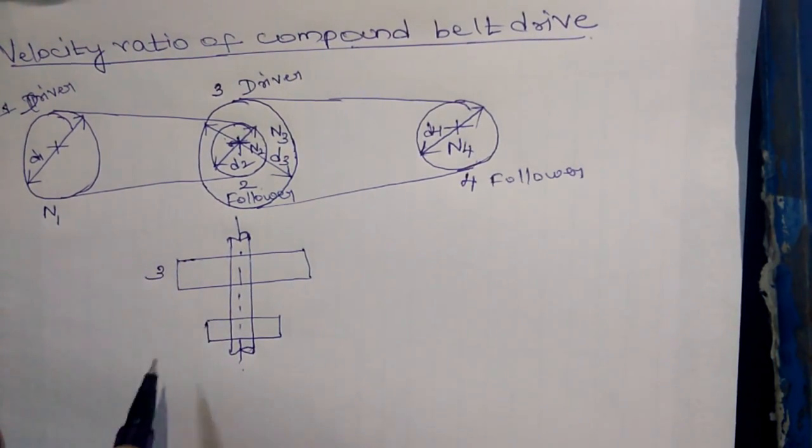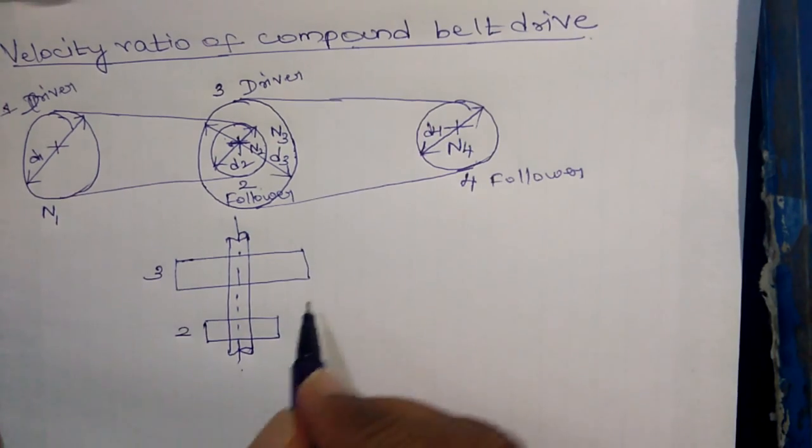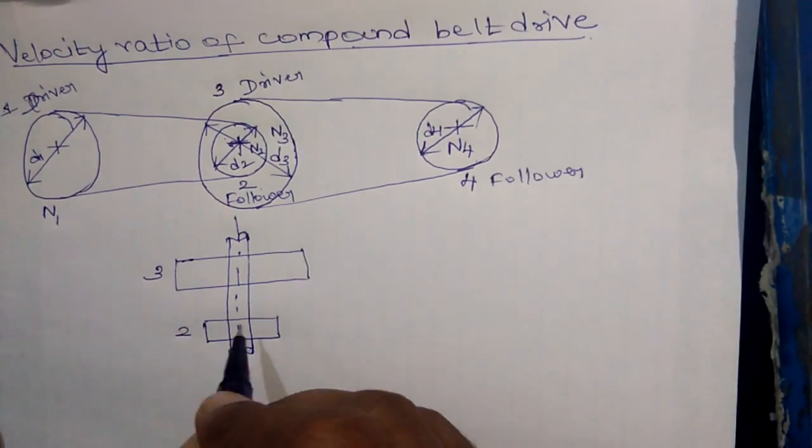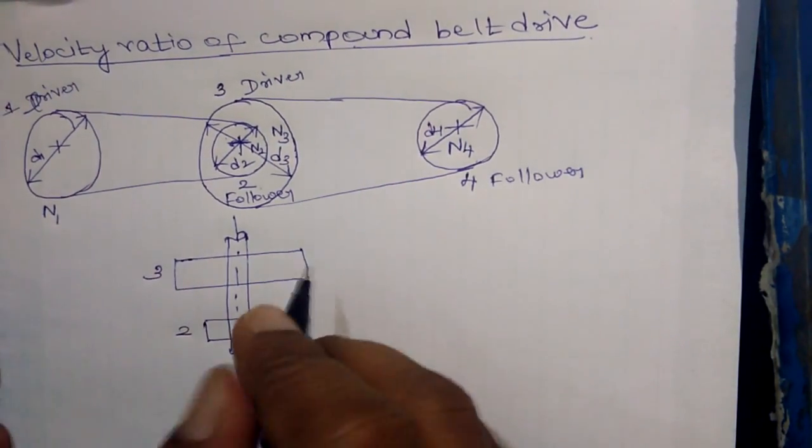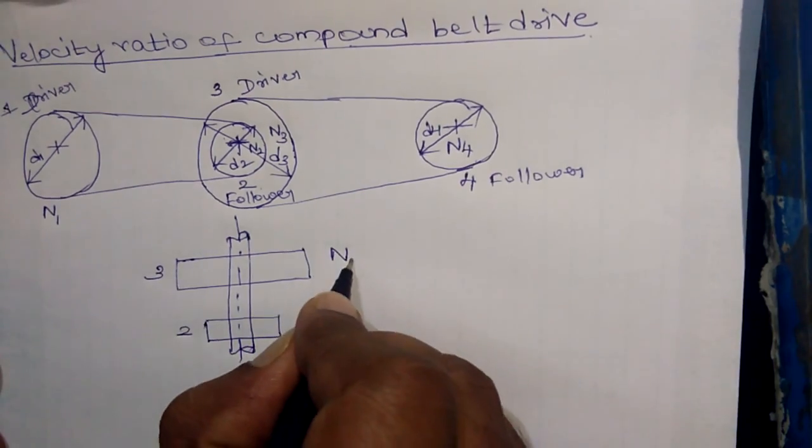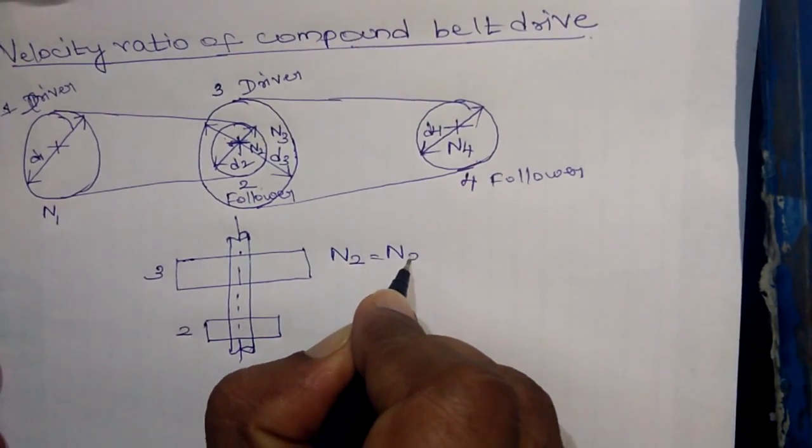This is pulley 3 and this is pulley 2. So since both the pulleys are mounted on the same shaft, speed of pulley 2 is equal to speed of pulley 3.